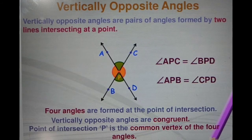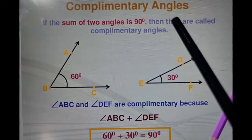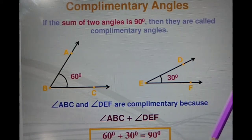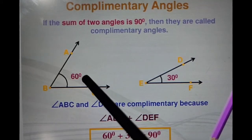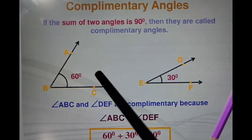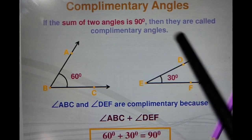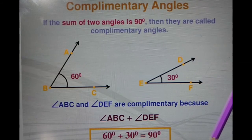Next, we have complementary angles. If the sum of two angles is 90 degrees then they are called complementary angles. For example, one angle is 60 degrees and another is 30 degrees — the sum of these two angles is 90 degrees, so these two angles are complementary angles. We add the two angles; if the sum is 90 degrees then that pair of angles is called complementary angles.